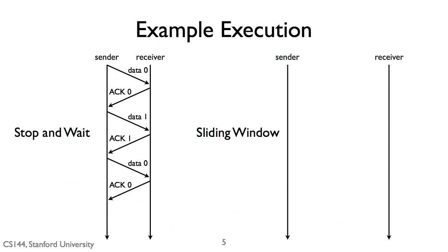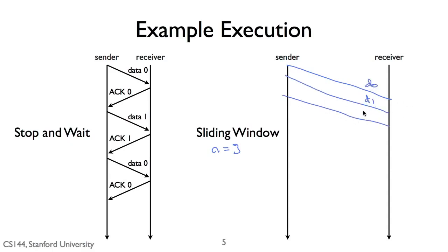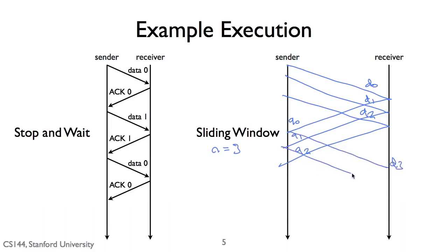To draw a picture showing what this looks like: in stop-and-wait we have a one-bit counter — data 0, ACK 0, data 1, ACK 1, data 0, ACK 0. In a sliding window of size 3, the sender sends D0, D1, D2, and the receiver acknowledges them: ACK 0, ACK 1, ACK 2. As soon as ACK 0 arrives, the sender sends data 3. As soon as ACK 1 arrives, it sends data 4. As soon as ACK 2 arrives, it sends data 5. Rather than having one packet, you can have many packets in flight. With a sending window of size 40, there are tons and tons of packets in flight.